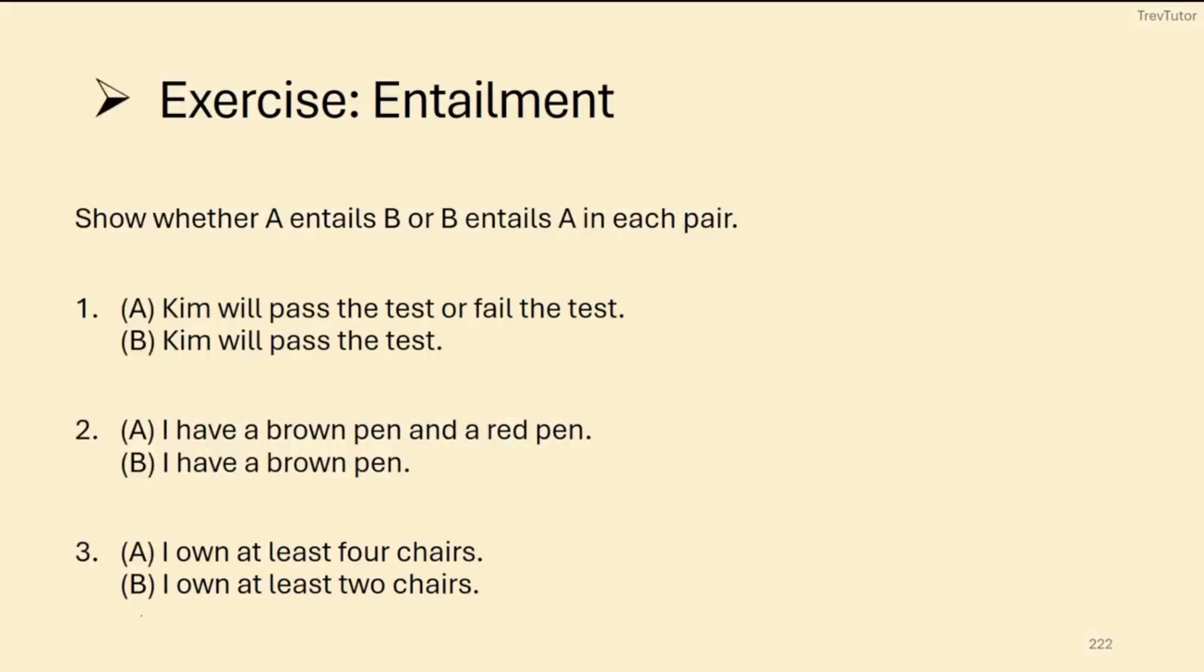So let's see if we can determine whether or not there's entailment in each example. Kim will pass the test or fail the test. Does that mean necessarily that Kim will pass the test? No, because she could pass or fail the test. So it doesn't mean she's going to pass the test, because she could fail it.